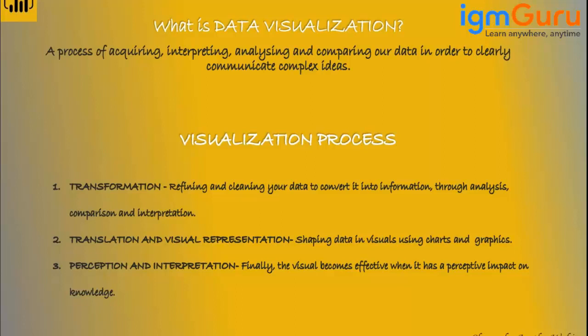The third part is Perception and Interpretation. Once I have made a chart — for example, a bar chart in Power BI — that chart should be able to clearly communicate insights, such as identifying the top five highest-selling departments and the lowest-performing ones. I might choose to change colors: green for the top five, blue for the rest, and red for the lowest.